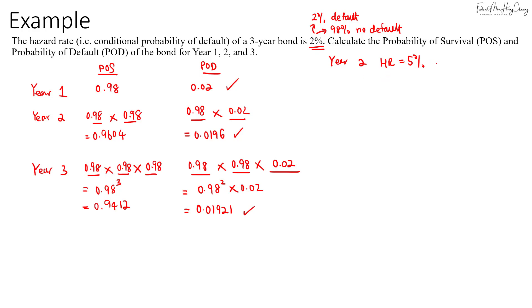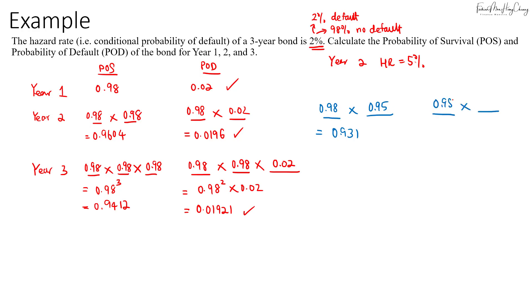When we calculate with the changed hazard rate, if we survive year one and survive year two, the probability of survival in year one is 0.98 and in year two is 0.95, giving 0.931. The probability of defaulting in year two — surviving year one and defaulting in year two — is 0.98 times 0.05, which gives us 0.049.